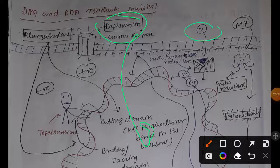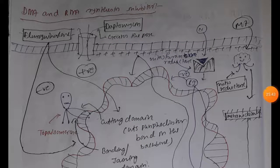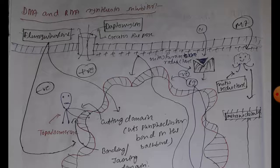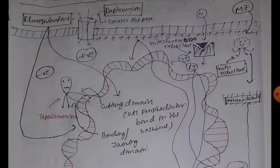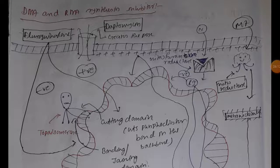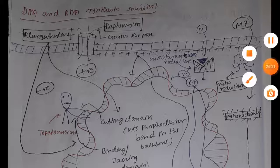Both daptomycin and nitrofurantoin inhibit DNA, RNA, and protein synthesis. That concludes the DNA/RNA synthesis inhibitor section. I hope this video was clear. I should also mention that I learned this chapter from Ninja Nerd Science, a very prominent and popular YouTube channel in the education field. You can also visit their channel to learn about antibiotics in detail. Thank you for listening.